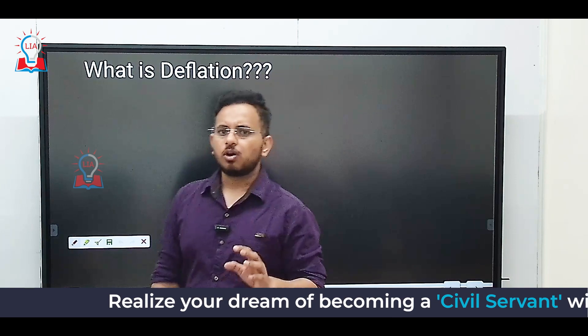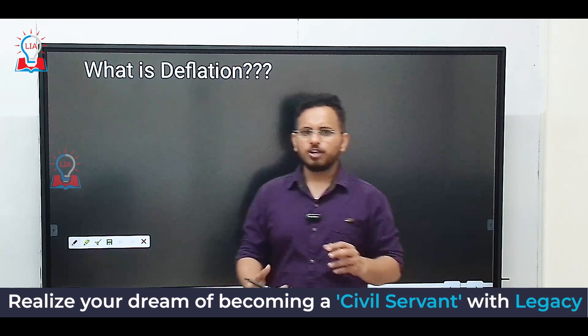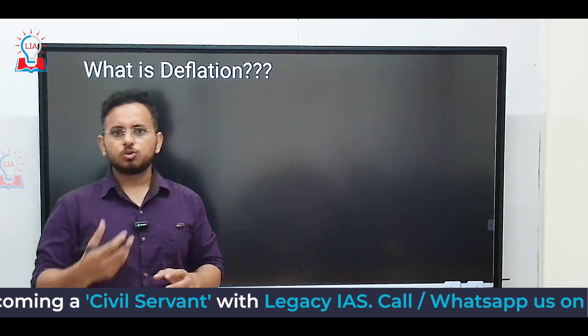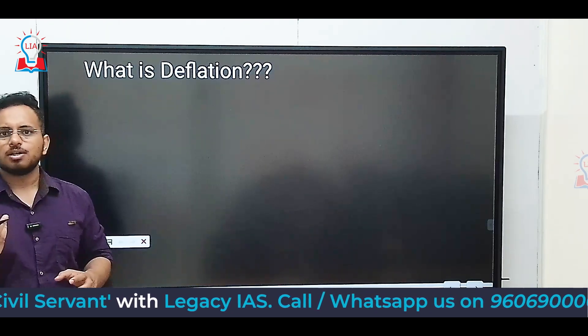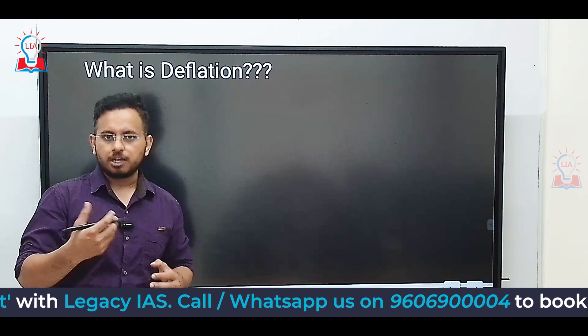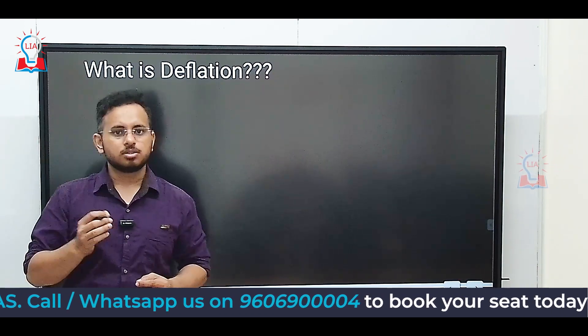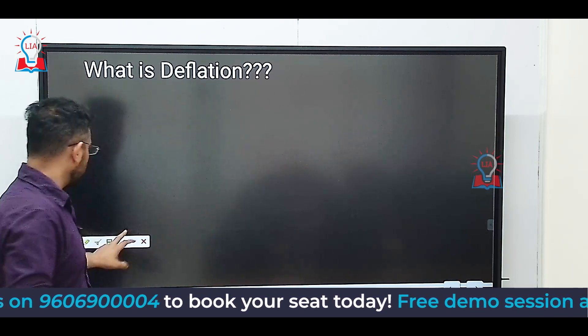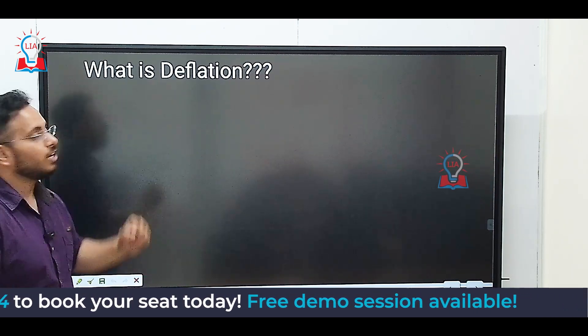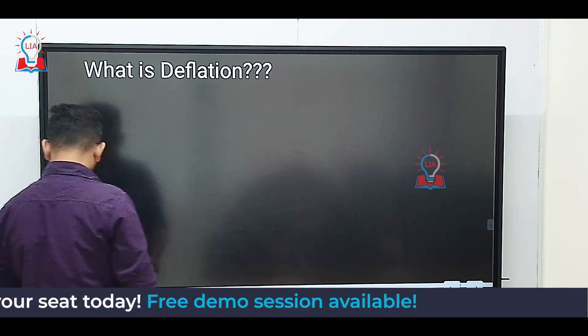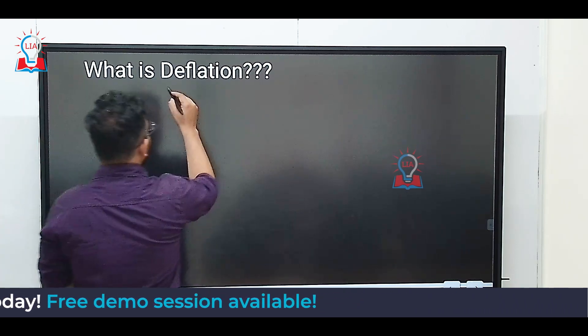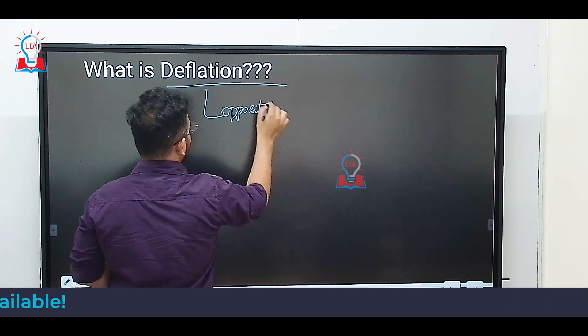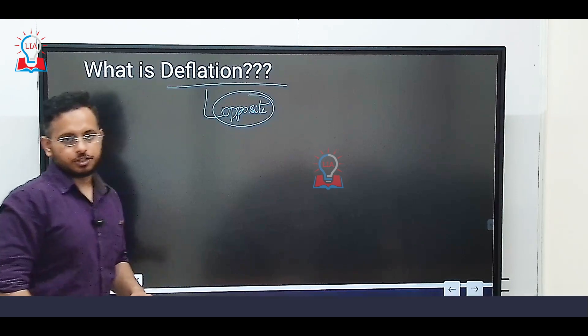If we talk about what is deflation, you would have studied about something called inflation. What is inflation? The general rise in the level of prices of goods and services throughout the economy can be called inflation. Whereas, what is deflation? Deflation is something that is exactly opposite to inflation. During inflation, the prices increase, but during deflation, the prices will reduce, will go down.